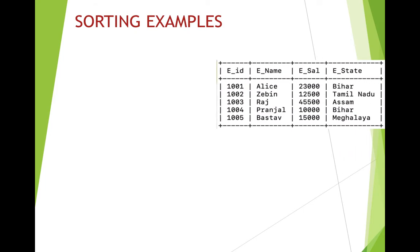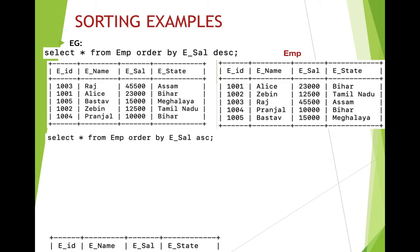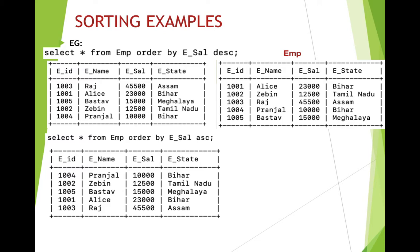Let's understand sorting with examples. We have a table not sorted in any order. To sort employee salary in descending order, the command is: SELECT * FROM emp ORDER BY esal DESC. The output shows employee salary arranged in descending order. All other corresponding fields also move with it. For ascending order, write: SELECT * FROM emp ORDER BY esal ASC — or simply omit ASC since it's the default.